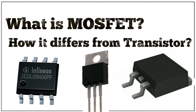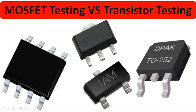In the ON-State, the MOSFET acts as a low-resistance channel, allowing current to flow between the source and drain terminals. This state is often referred to as saturation in MOSFET terminology.